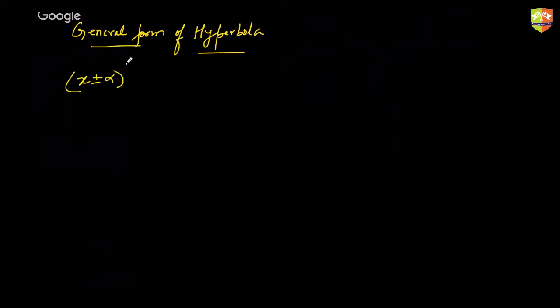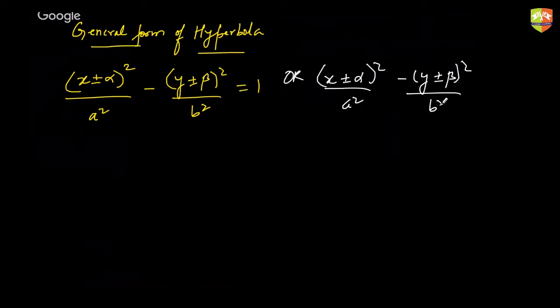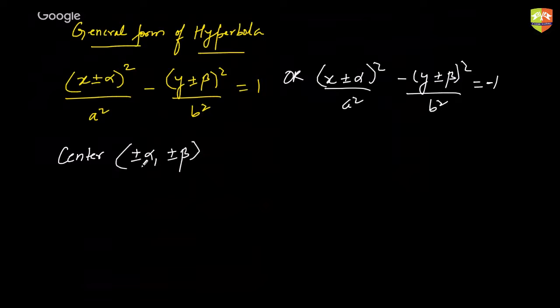Now we'll take up questions on the general form of a hyperbola. When I say general form, the center is no longer at the origin — it is at (±α, ±β). The transverse and conjugate axes remain parallel to the x and y axes respectively.